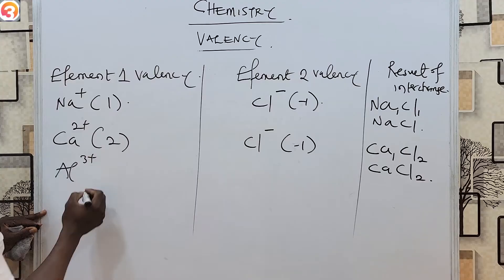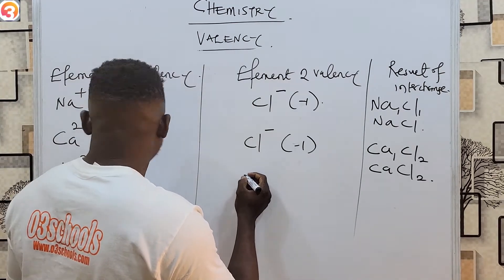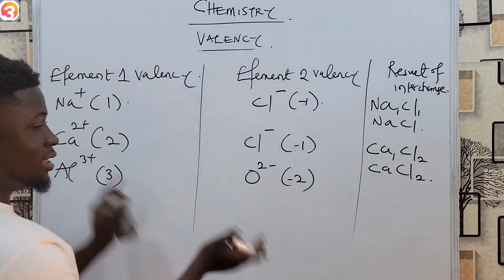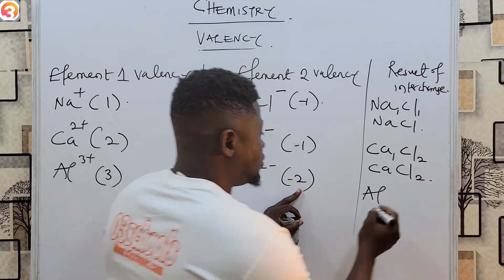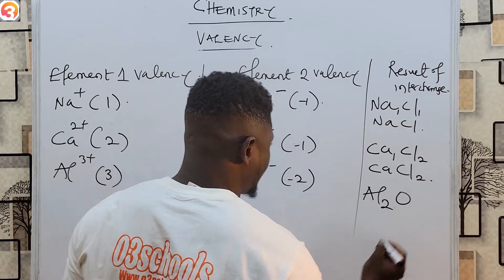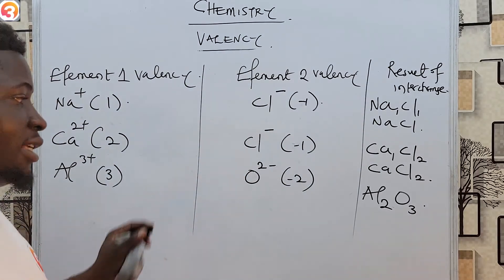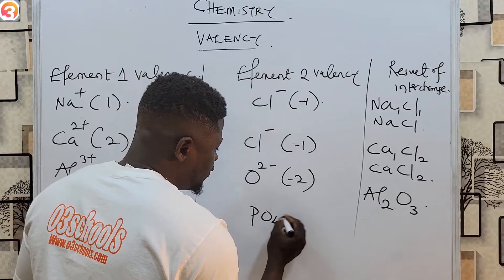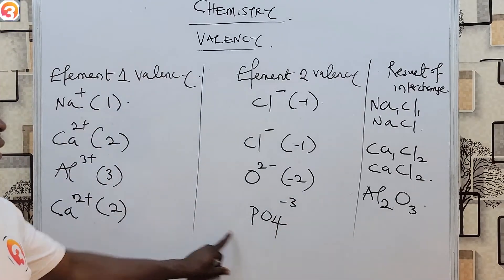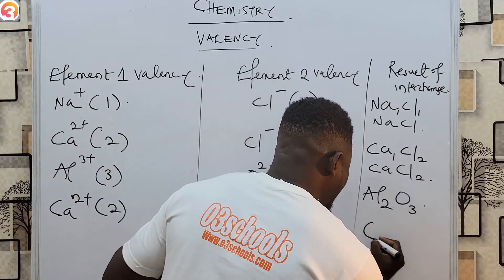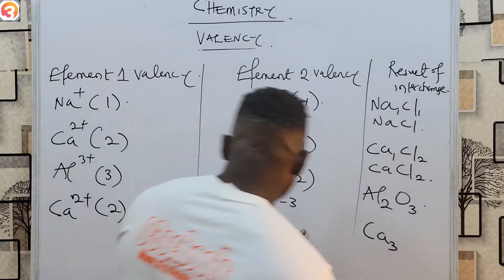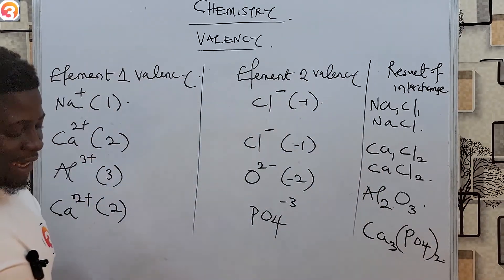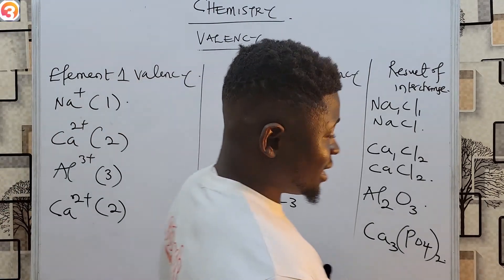Another example: aluminium (Al³⁺) has valency three and oxygen (O²⁻) has valency two. Interchanging: Al gets subscript two and O gets subscript three, giving Al₂O₃. Also, calcium (Ca²⁺) has valency two and phosphate (PO₄³⁻) has valency three. Interchanging: Ca gets subscript three and PO₄ gets subscript two, giving Ca₃(PO₄)₂. It's as simple as ABC.